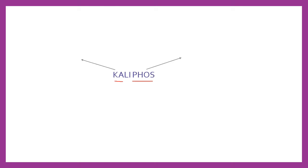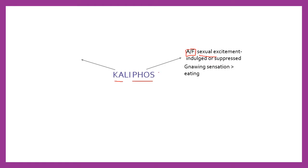Starting with Phos, that is phosphorus: the ailments in Caliphos come from sexual excitement, either indulged or suppressed. We know phosphorus individuals are hypersexual — they love to be magnetized, massaged, and looked upon. Similarly, Kali Phos also has the peculiar ailment from sexual excitement indulged or suppressed. The second thing similar to Phos is a gnawing sensation better by eating. Kali Phos has a nervous gnawing sensation at the pit of the stomach and an empty gnawing sensation relieved by eating, along with indigestion.